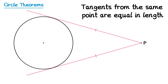We can also add a bit more information to this diagram. If you draw the angle at P and then draw a line from the centre of the circle to P, this line will split that angle in half — or we could say it bisects the angle. So if the whole angle here was 30 degrees, then we'd have 15 degrees on the top and also 15 degrees on the bottom.